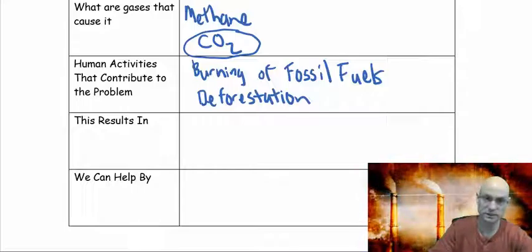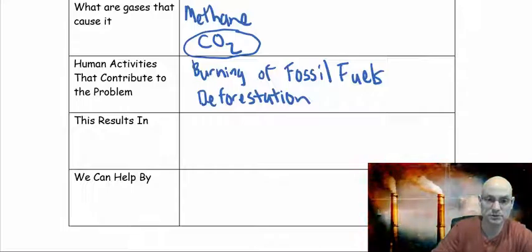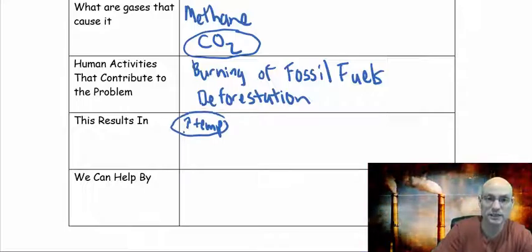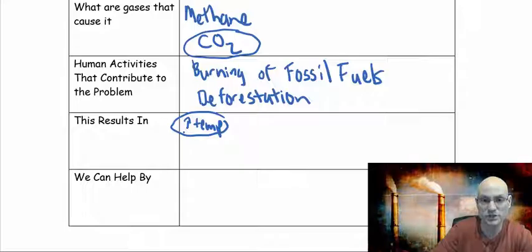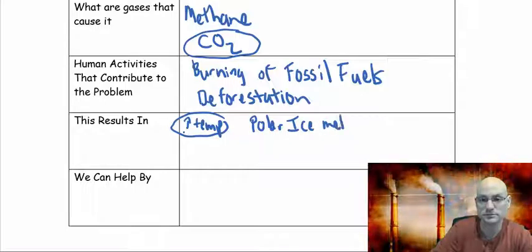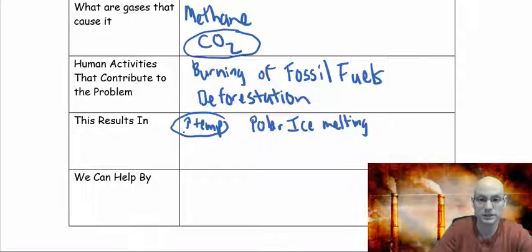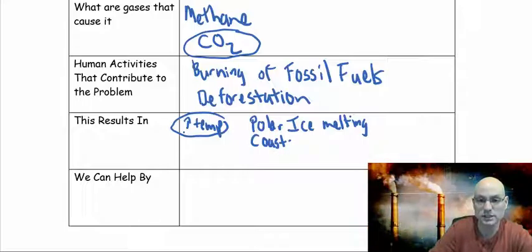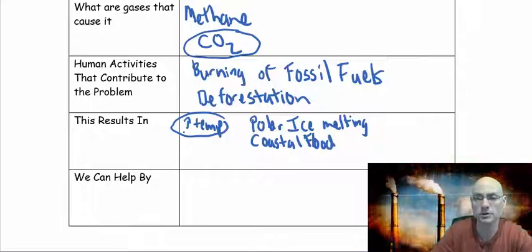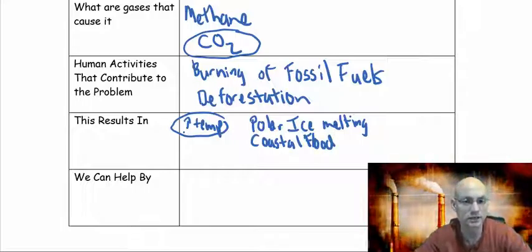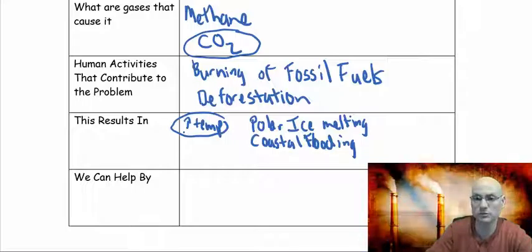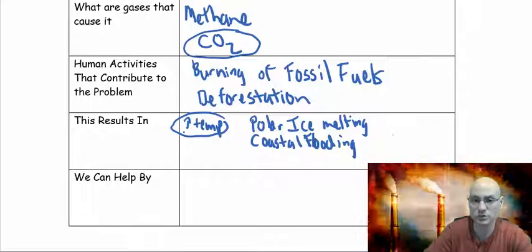What does all of this result in? We got increased temperature, but that's obvious. You'll never be able to use that on a Regents exam. What can you say is polar ice is melting. We can also say things like coastal flooding. We're talking about increases of millimeters per year. Doesn't sound like much, but give it a hundred years and it starts to add up. Changes in weather patterns, so that's where the term climate change comes from.